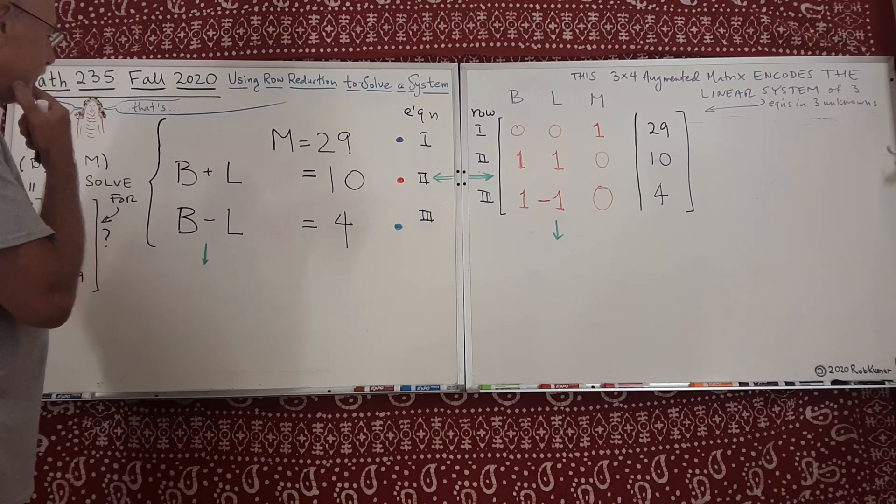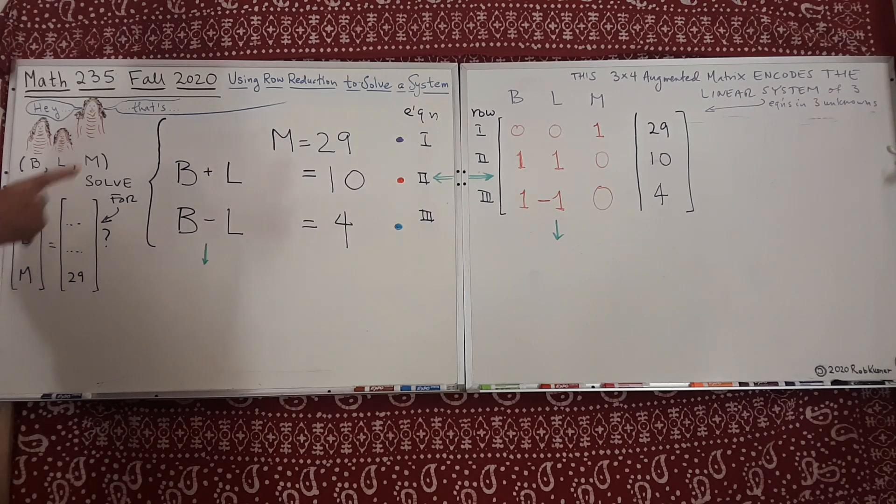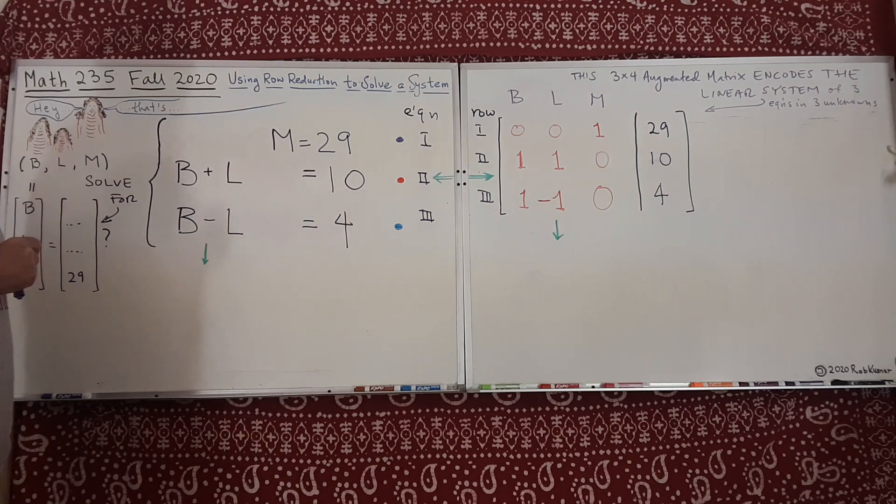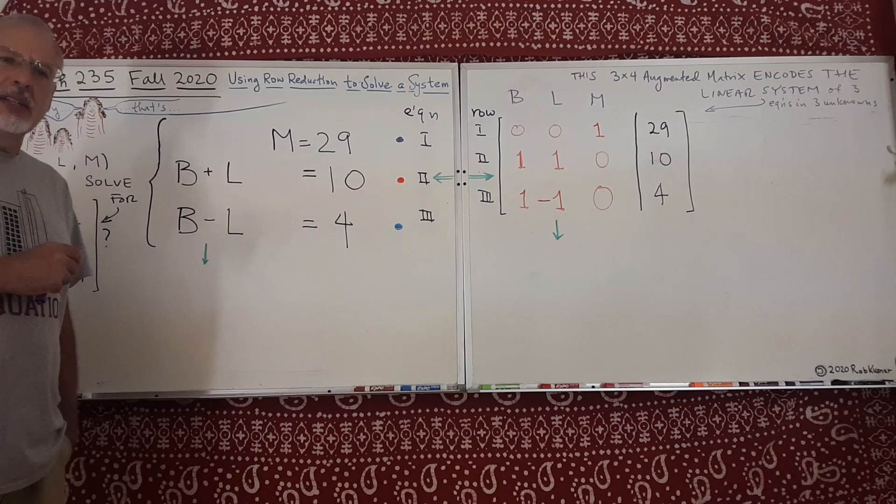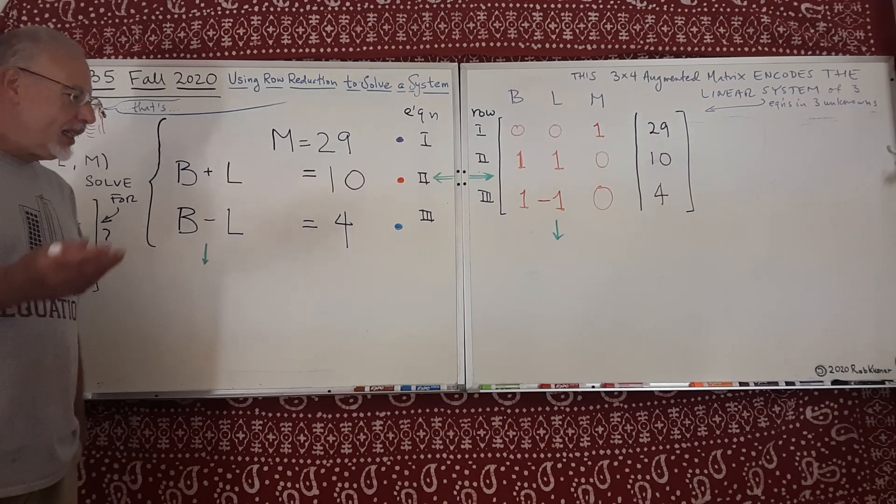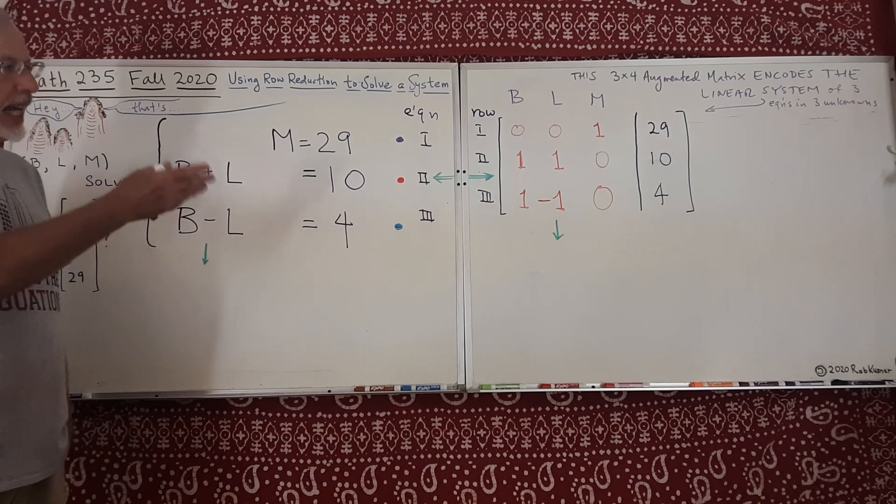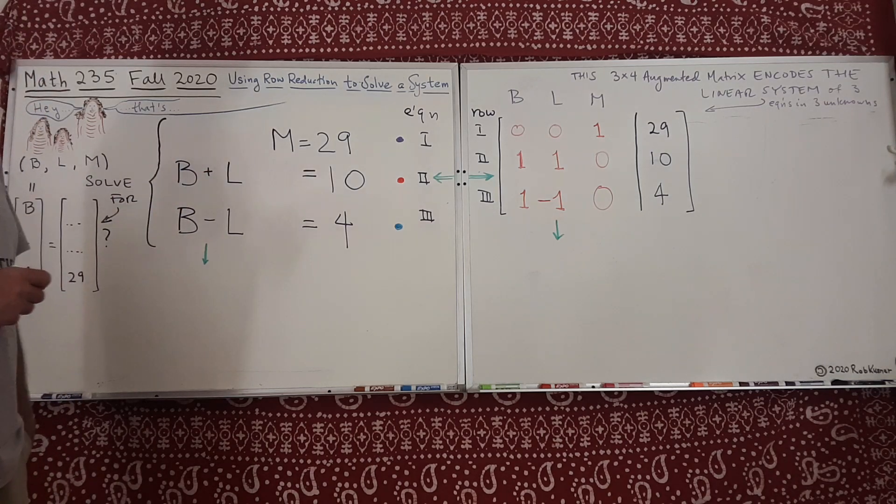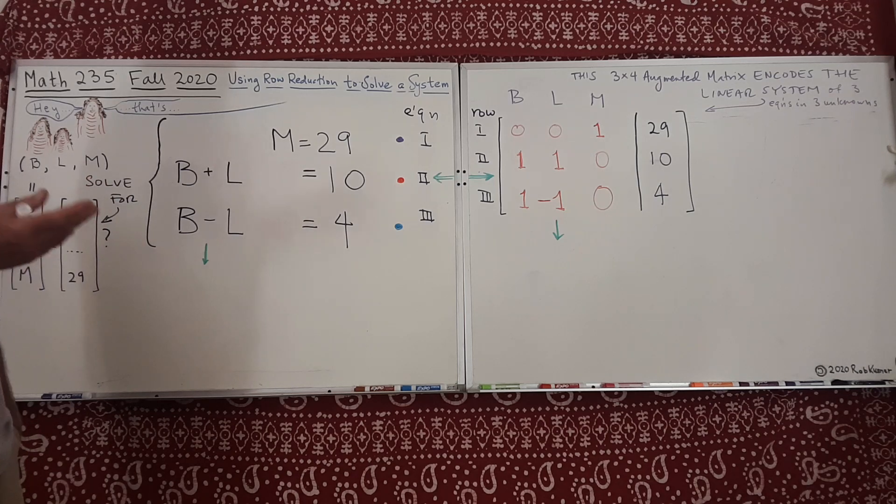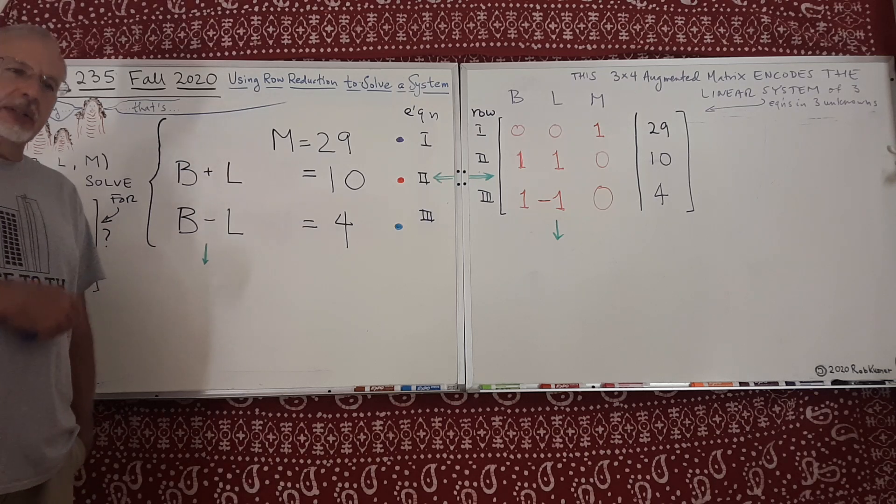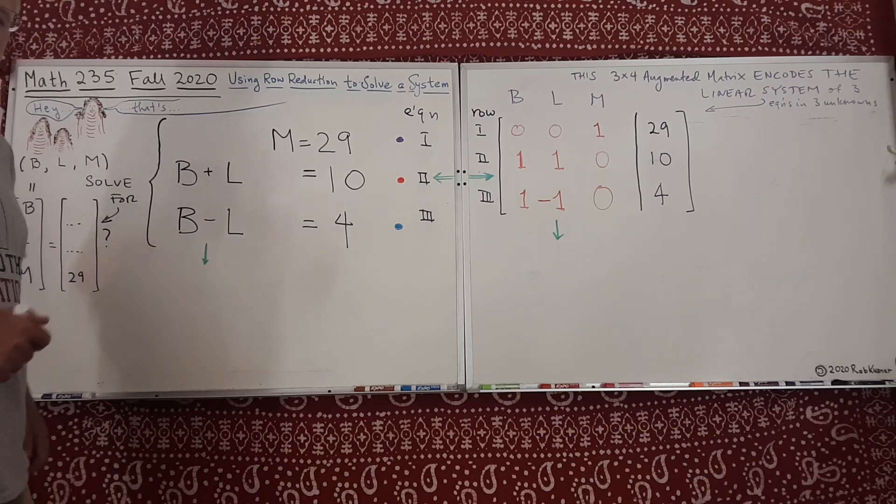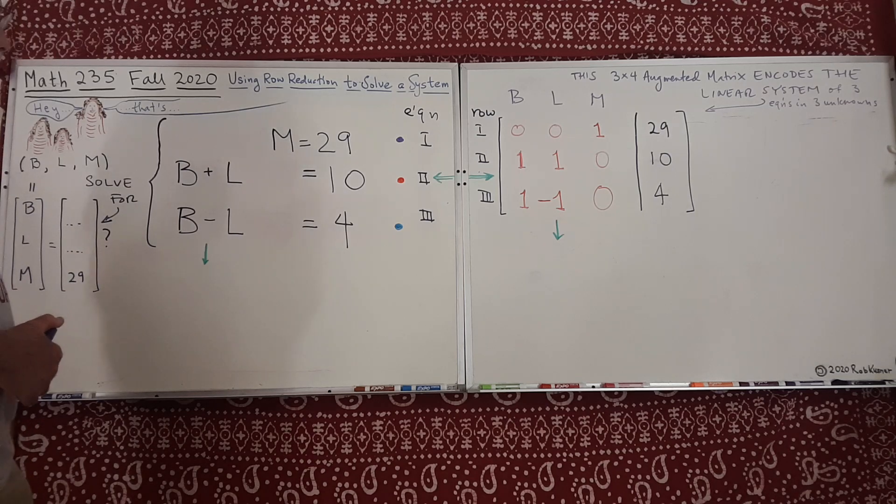We're going to finally solve that linear system we've been looking at for the last couple of short lectures. Last time we saw how to encode the system in an augmented matrix, and the time before we looked at the geometry of the system and saw that we should expect a unique solution. I think you've already solved it, but let's understand the algorithm row reduction that works for any system, not just this one, and let us know not only whether there's a solution, whether it's unique, but how many parameters of solutions there are if there's more than one solution.